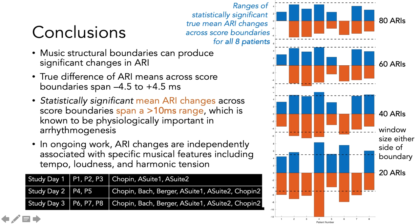We now have gone on to look at changes in specific music features, such as loudness, tempo, and different kinds of harmonic tension. And data from all eight participants, and 15 music performances from the three study days, to demonstrate that ARI changes are not random, but can be linked to specific features in the music.